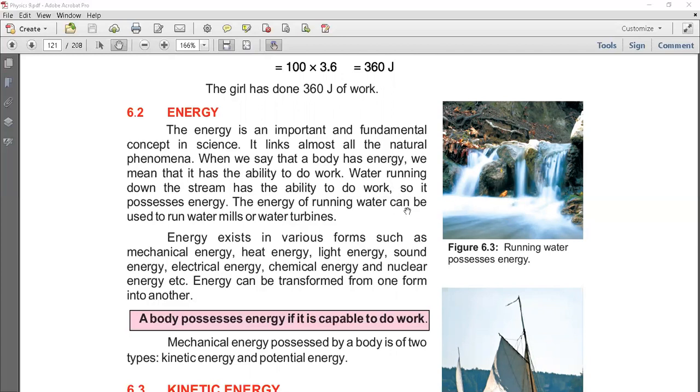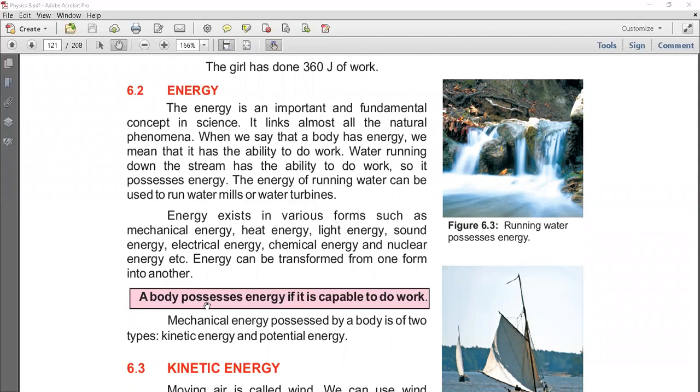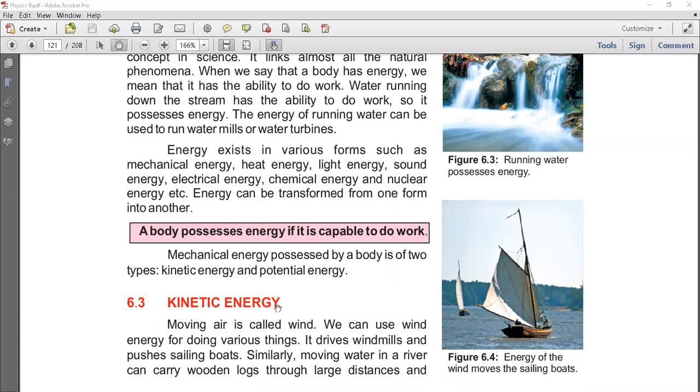Energy can be of many different forms: mechanical energy, heat energy, light energy, sound energy, electrical energy, chemical energy, and nuclear energy. A body possesses energy if it is capable to do work. Mechanical energy possessed by a body is of two types: kinetic energy and potential energy.